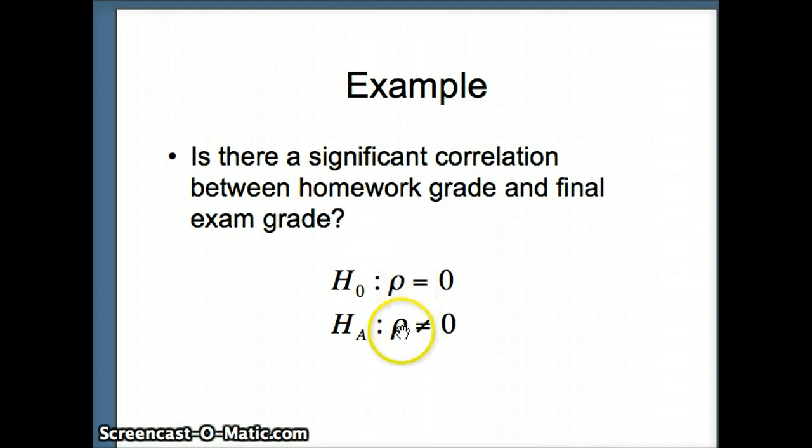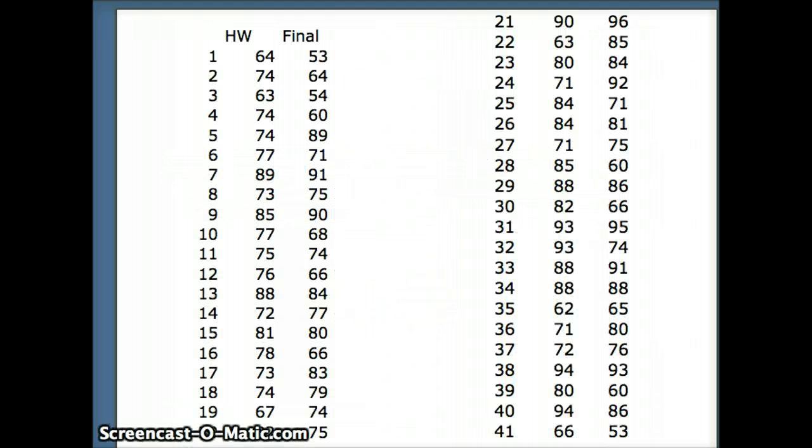We certainly would expect it to be positive, but we will do this as a two-tailed test. Rho is our parameter, and we will go ahead and find our test. So here's some data. We have 41 students.